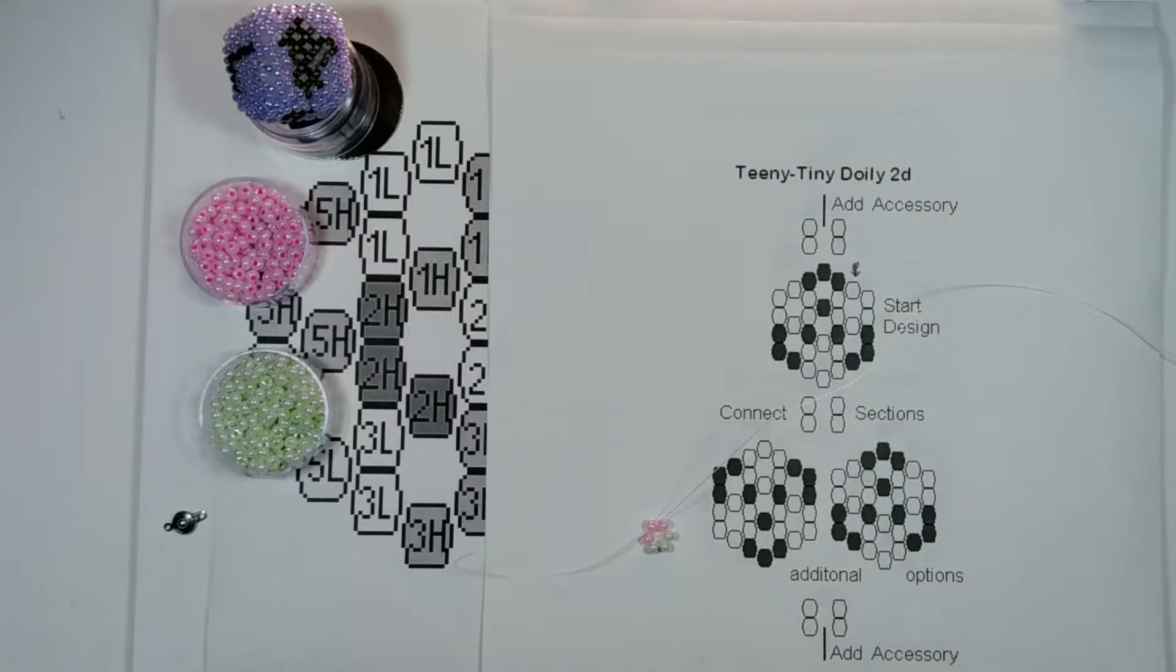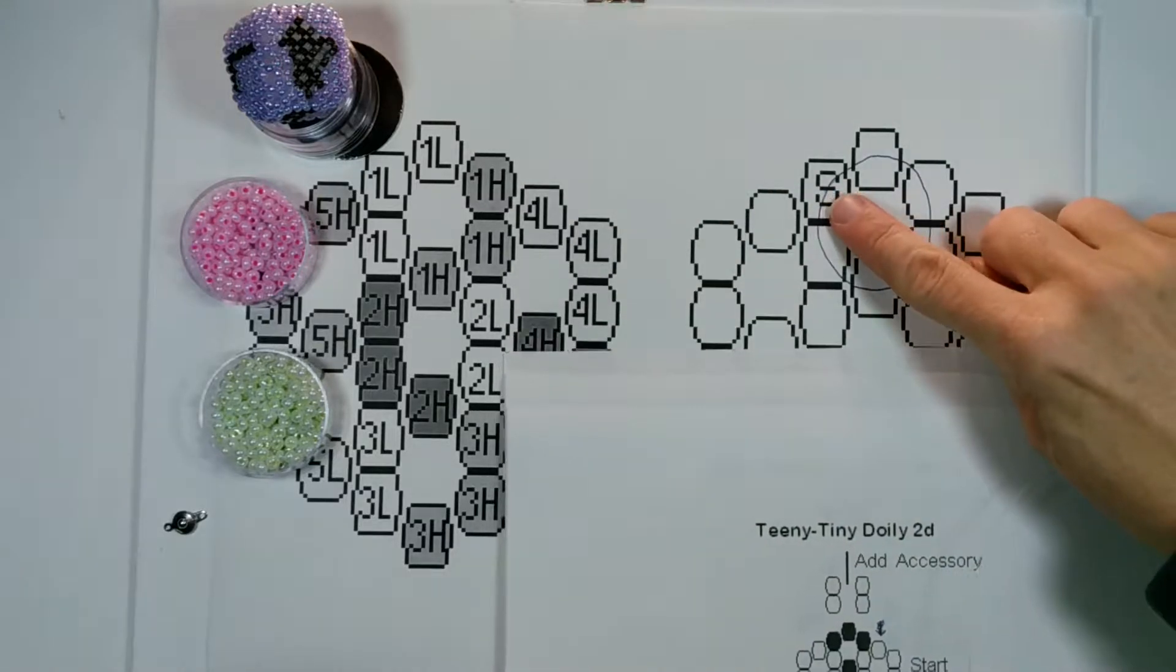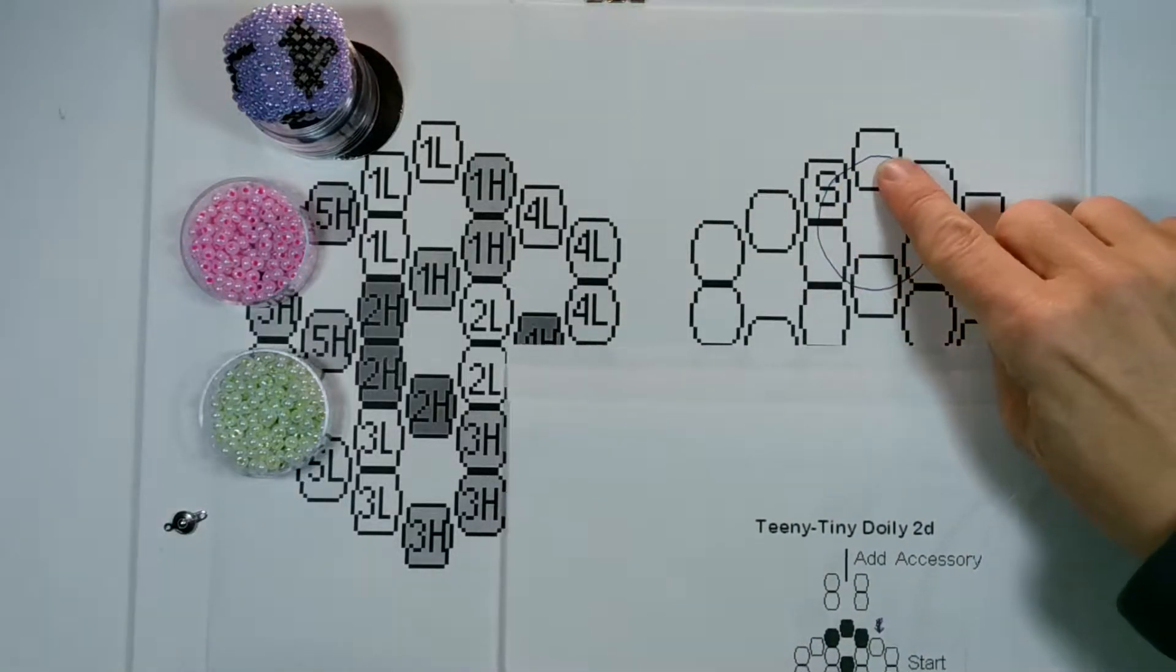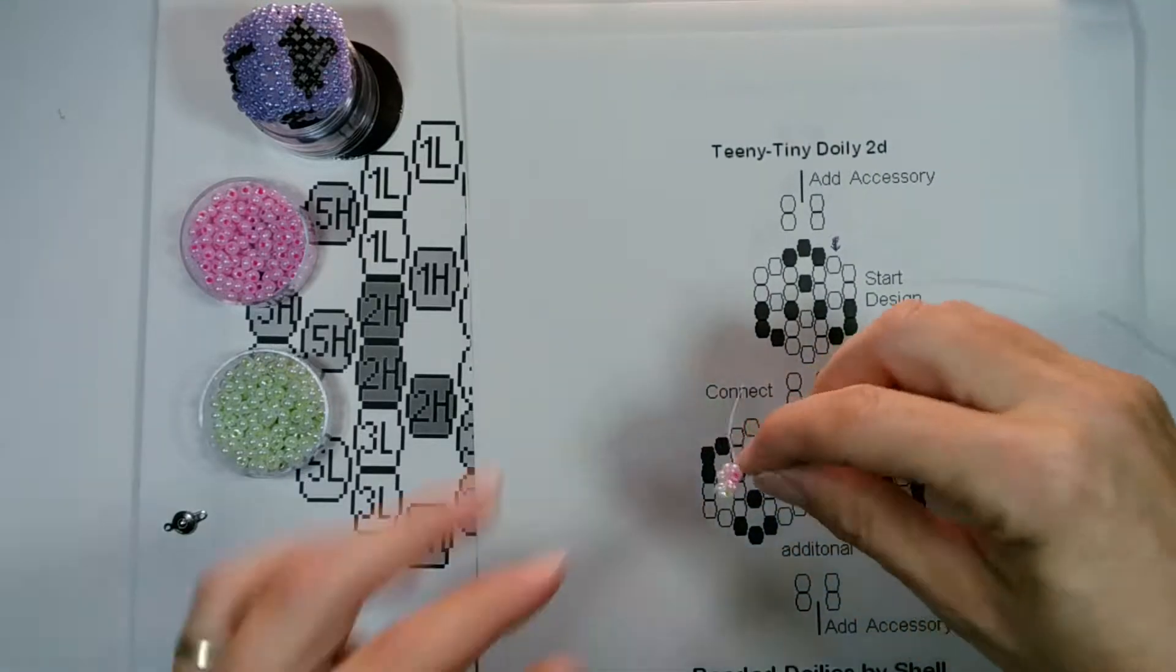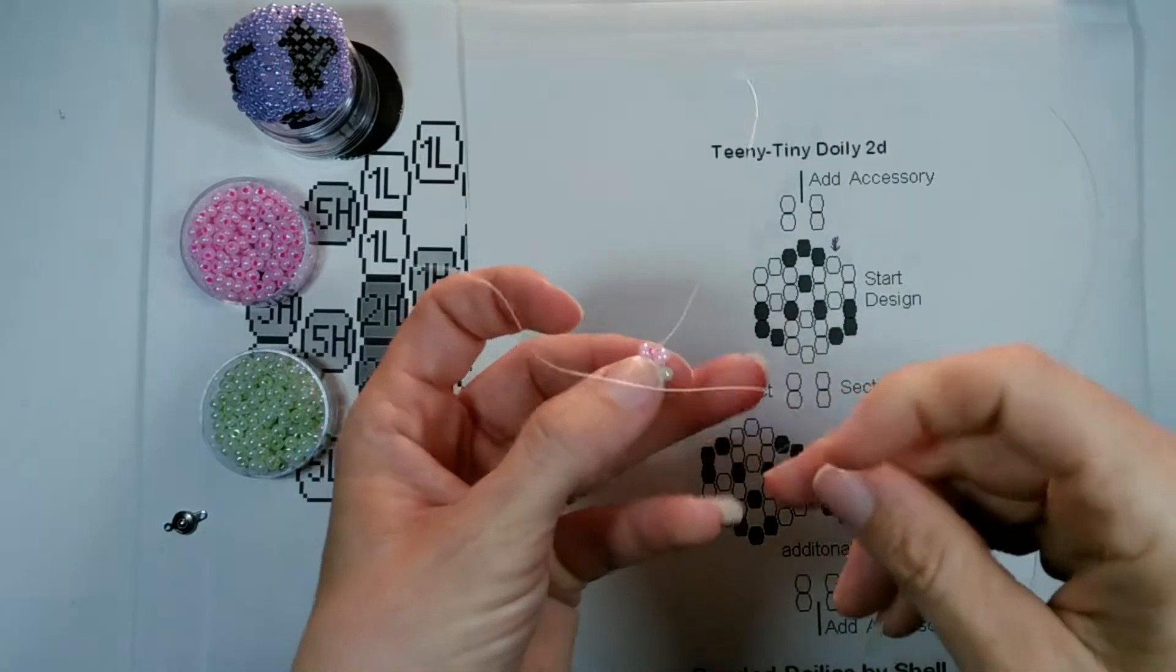For the accessory, you want to remember that we are coming out this side bead here, and we want to come out the top bead. So we want to take our working string and go through one bead, and now we're coming out of that top bead.